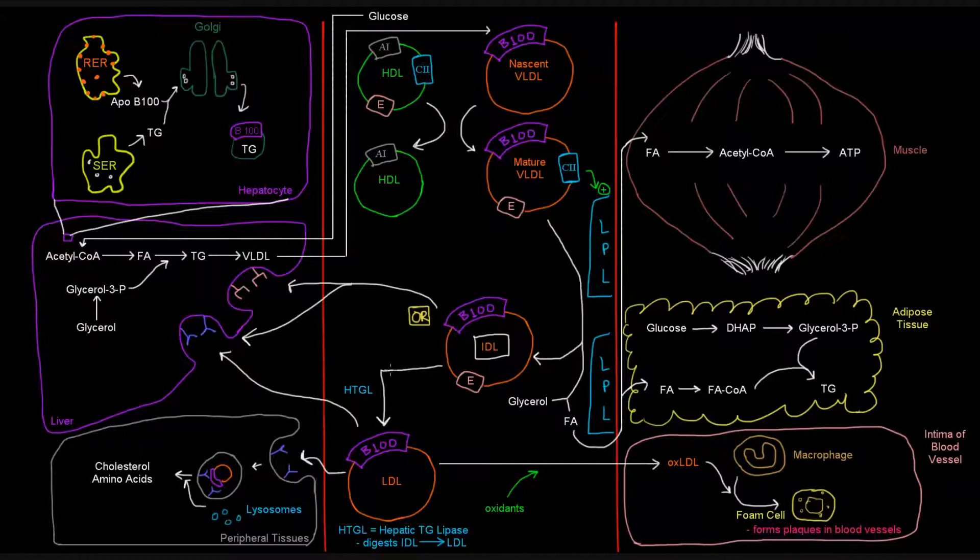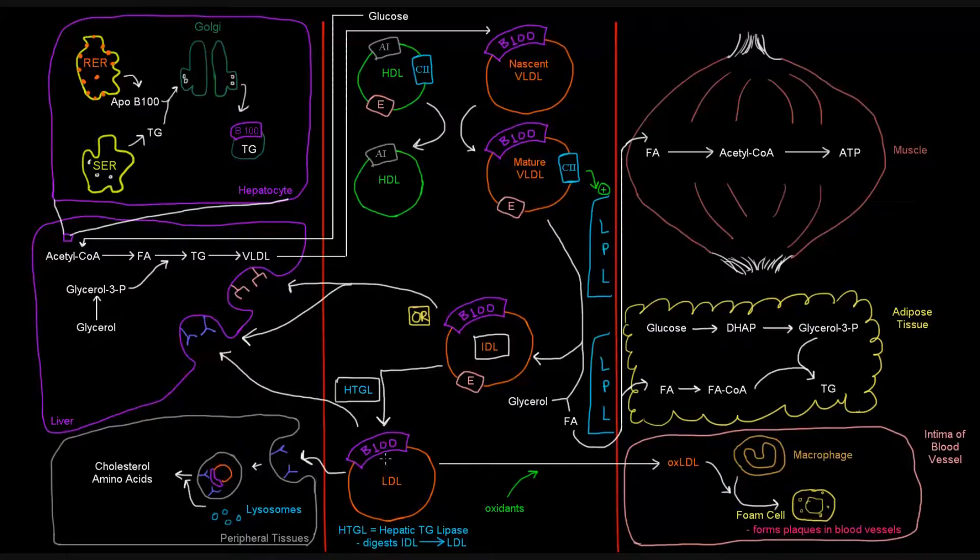Or it can give rise to LDL via HTGL, the hepatic triglyceride lipase, which will digest the IDL to LDL, which actually gets rid of the ApoE protein. And then we have LDL, which is talked about in the next video. So this video is kind of short because IDL is pretty much just a precursor.